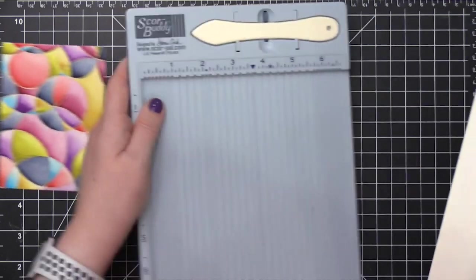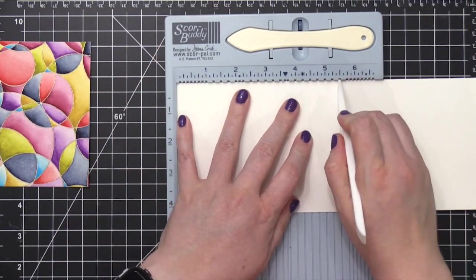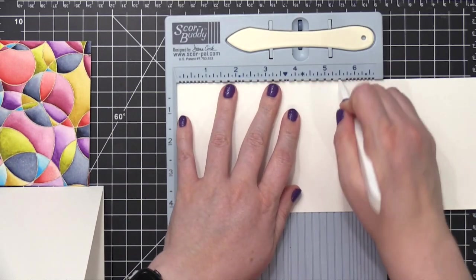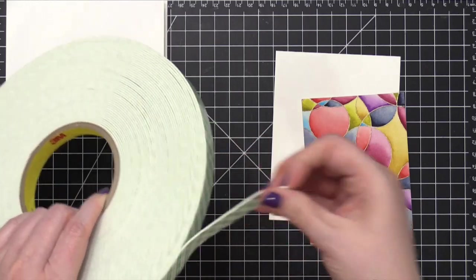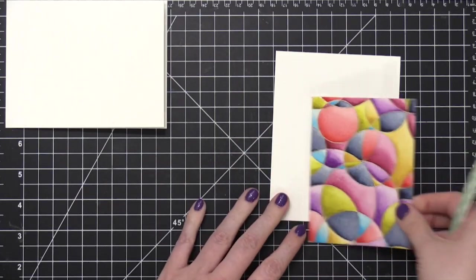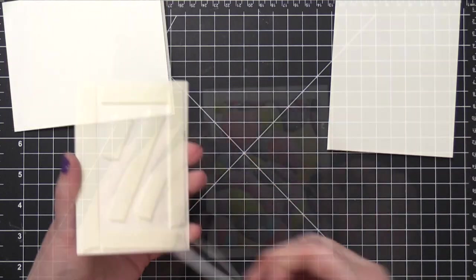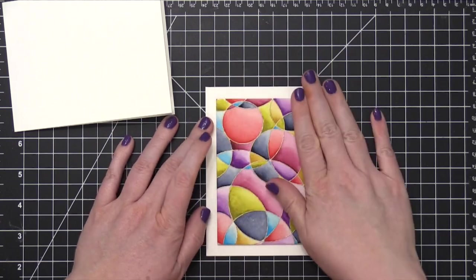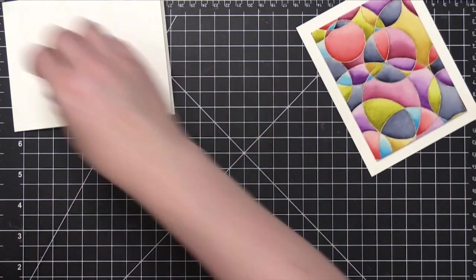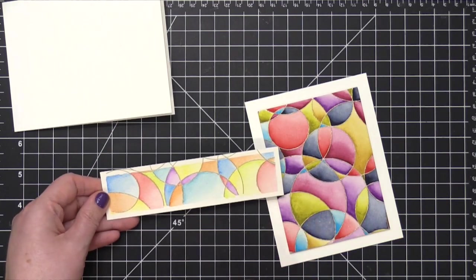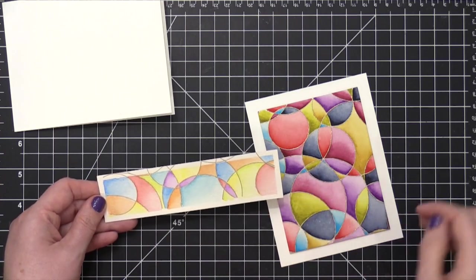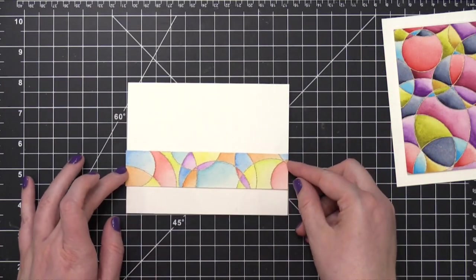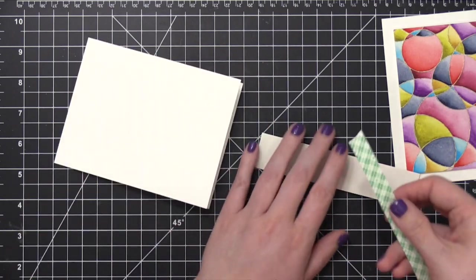The cardstock I'm using is a Neenah Classic Crest Solarite, and I'm going to score this at five and a half to create a top folding card. And then for the other one, I'm going to score it in the same spot, but this is going to be a landscape card. I'm using some foam tape for adhering the watercolor panel. I'll just adhere this directly onto the front of the card, or as centered as I can get it. And then for the other card, which as you can tell, the color difference is extreme. The pencils just don't pack as much punch as the watercolor set from American Crafts. So I'm going to trim this down so only the painting is showing.